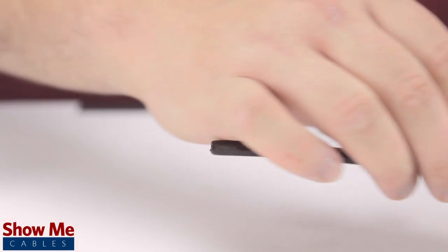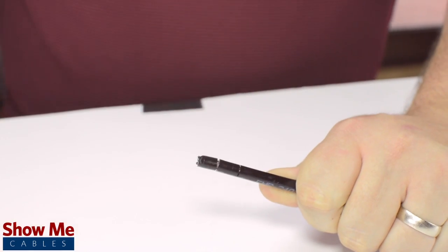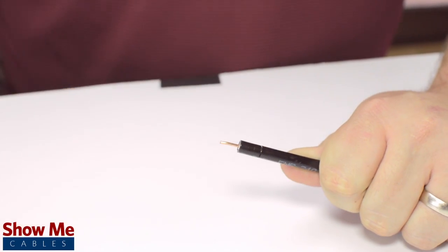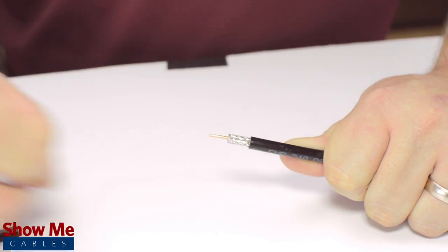Start by inserting the ferrule over the outer jacket of the cable. Then using your cable stripper, strip back the outer jacket and dielectric. The advantage of using a cable stripper is that it will strip back the jacket and dielectric at the same time.